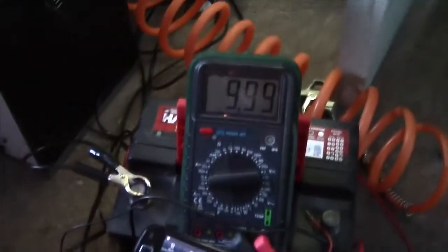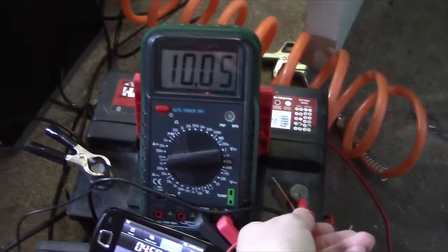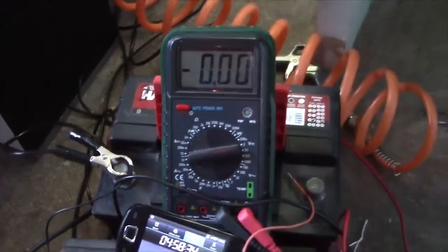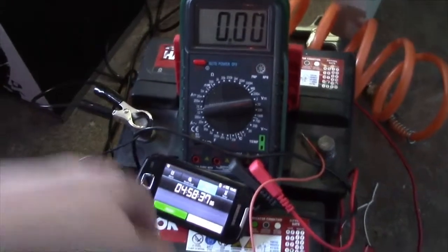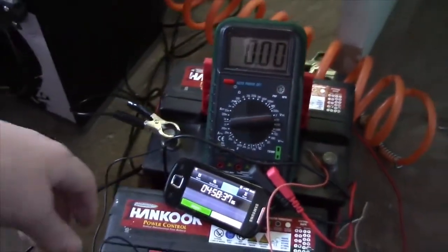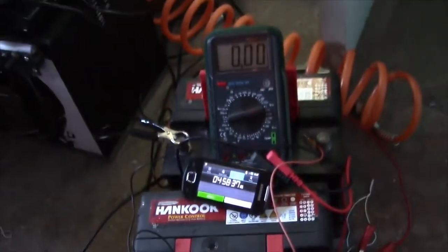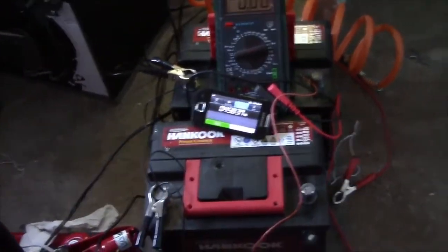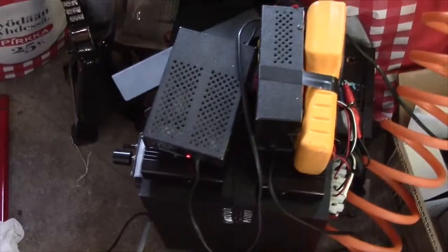Load off and let's see what OCV we get. 999, 10 volts, 10.05. Pretty much exactly the same as before, but at least they've been exercised a bit. So I'm gonna charge them back up and then hook them back up to my UPS and see if they perform any better than last time. And there we go, I'm using two chargers this time to speed the process up a bit.